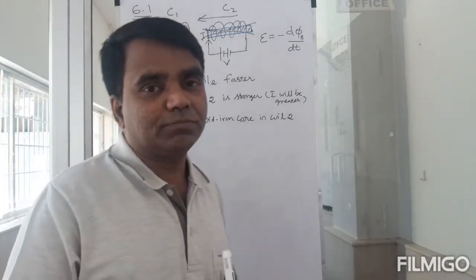Now let's do example 6.2. A square loop of side 10 cm and resistance 0.5 ohm is placed vertically in the east-west plane. A uniform magnetic field of 0.1 tesla is set up across the plane in the north-east direction. The magnetic field is decreased to zero in 0.7 seconds at a steady rate. Determine the magnitudes of induced EMF and current during this time interval.